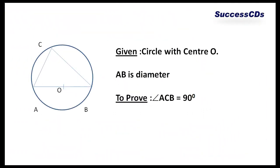Now here we are given a circle with center O. AB here is diameter of the circle. C is any other point on the circle. Now I have to prove angle in a semicircle is a right angle. That means I have to prove here angle ACB is equal to 90 degrees.